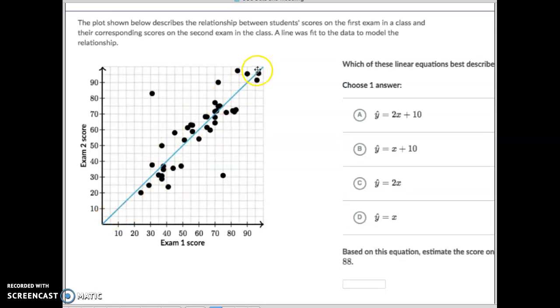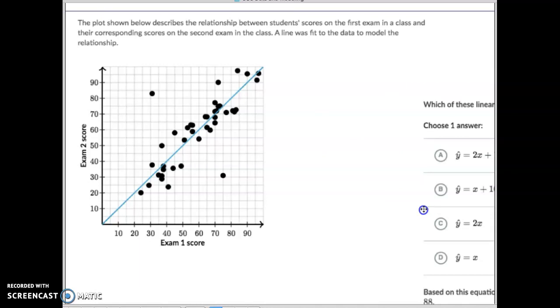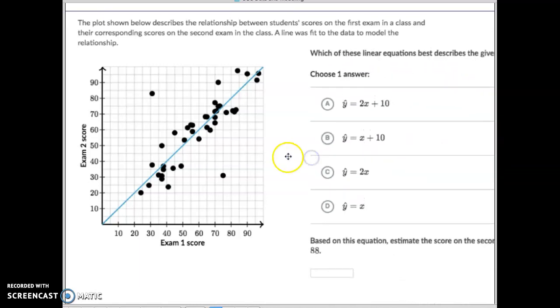All right, second one. Here is our line of best fit. First step, we got to find the y-intercept. Hey, what is our y-intercept there? If you said zero, you're correct, which means this has a y-intercept of 10. This has a y-intercept of 10. So there can't be that one. Notice there's nothing being added or subtracted. So, it literally is like being plus a zero or a y-intercept of zero. So, it's going to be either C or D.